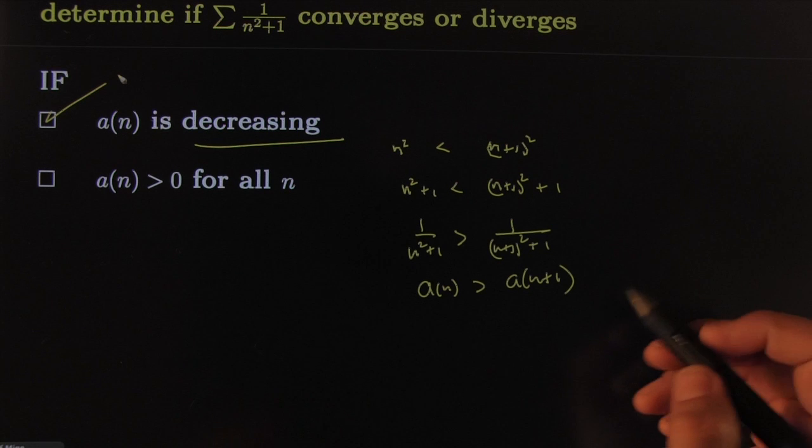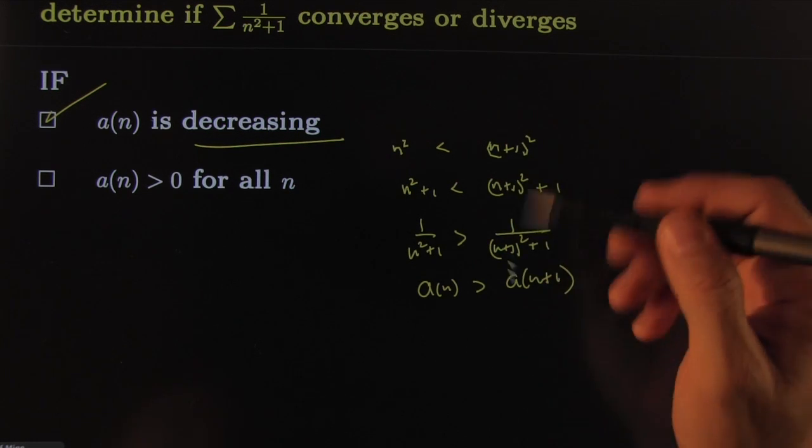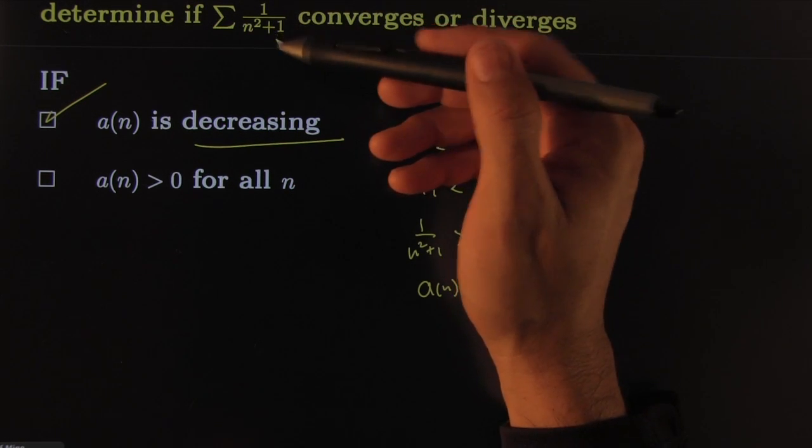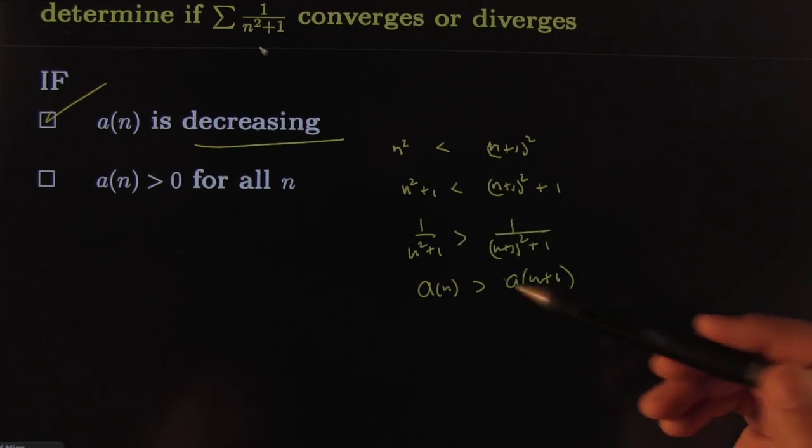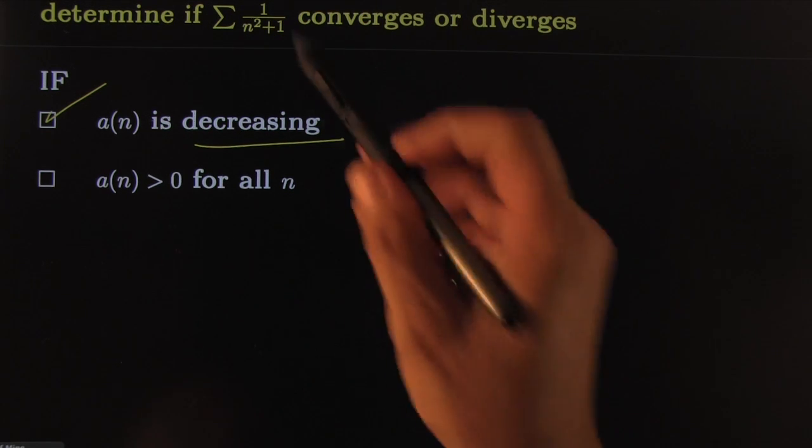That's how you really check it. Again, there's other ways you can check decreasing. For this one, you can almost look at it and just say by common sense it's decreasing, or you can get fancy with first derivatives and whatnot.